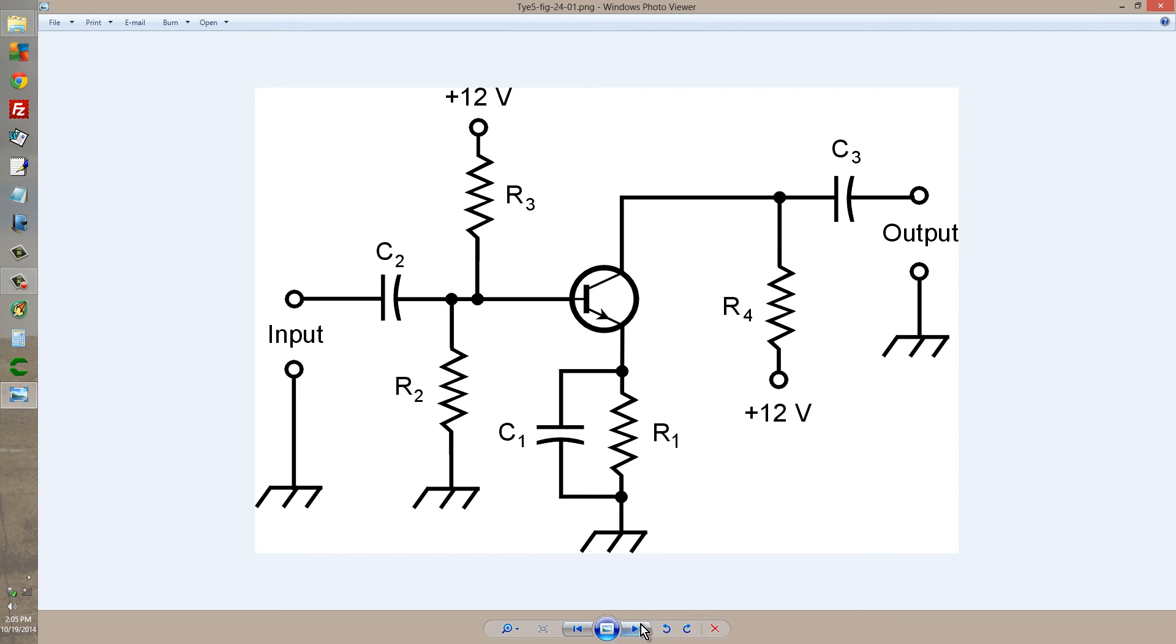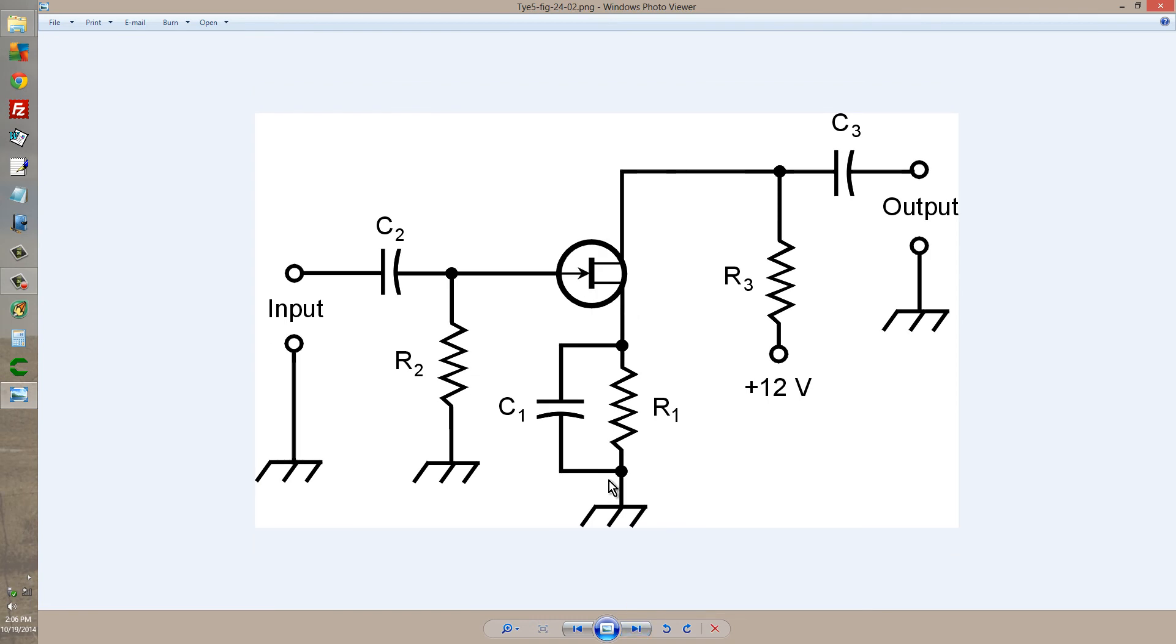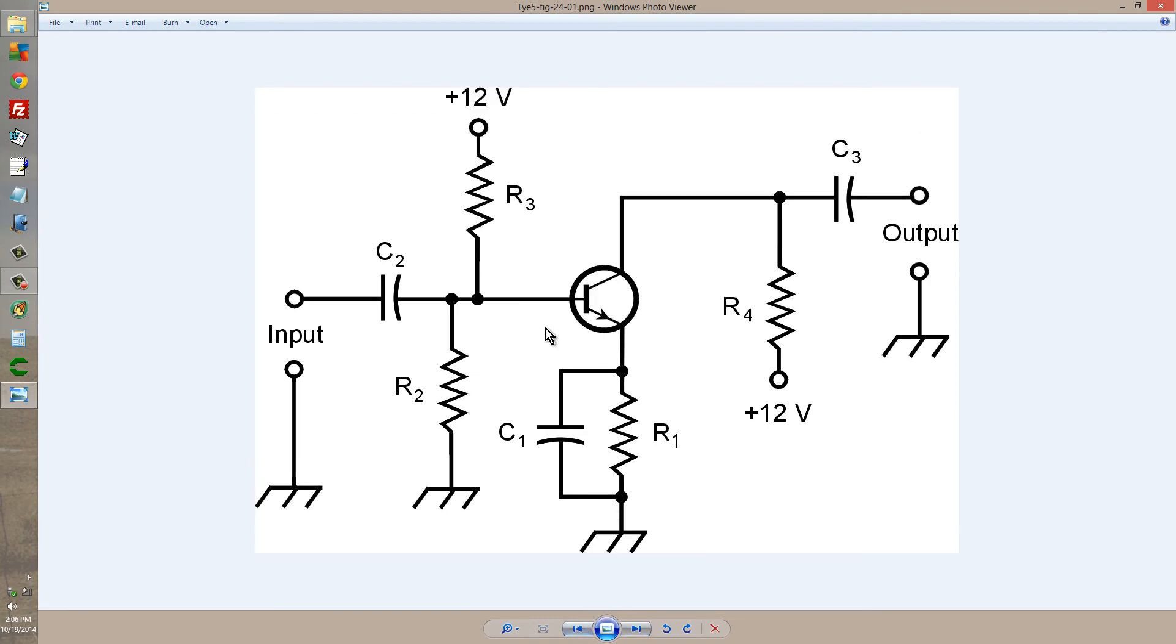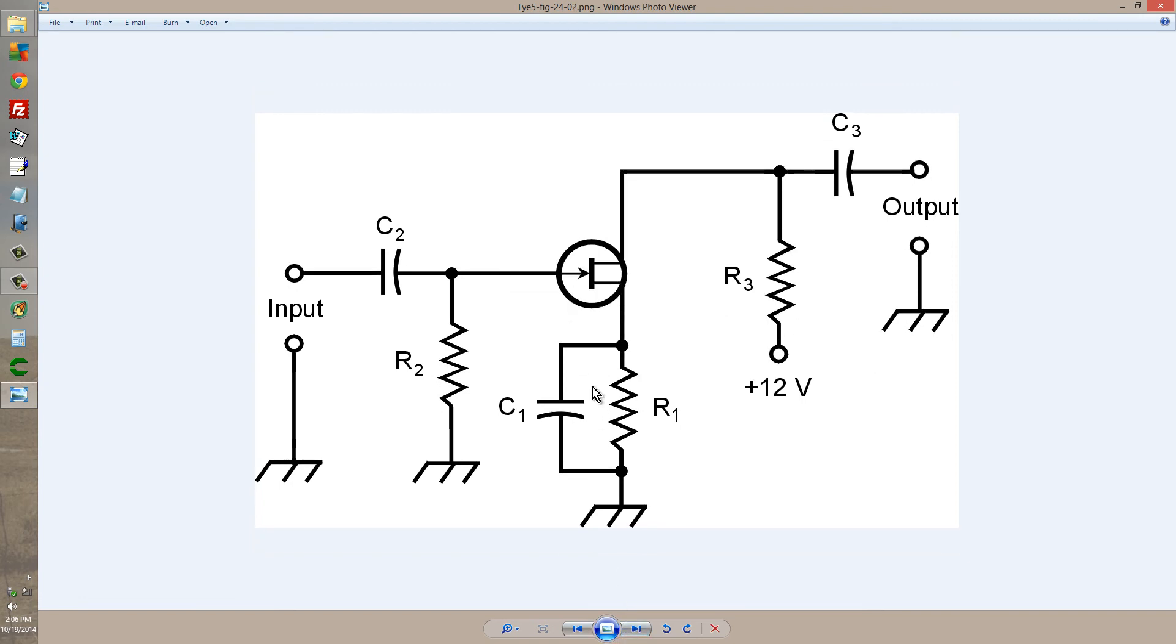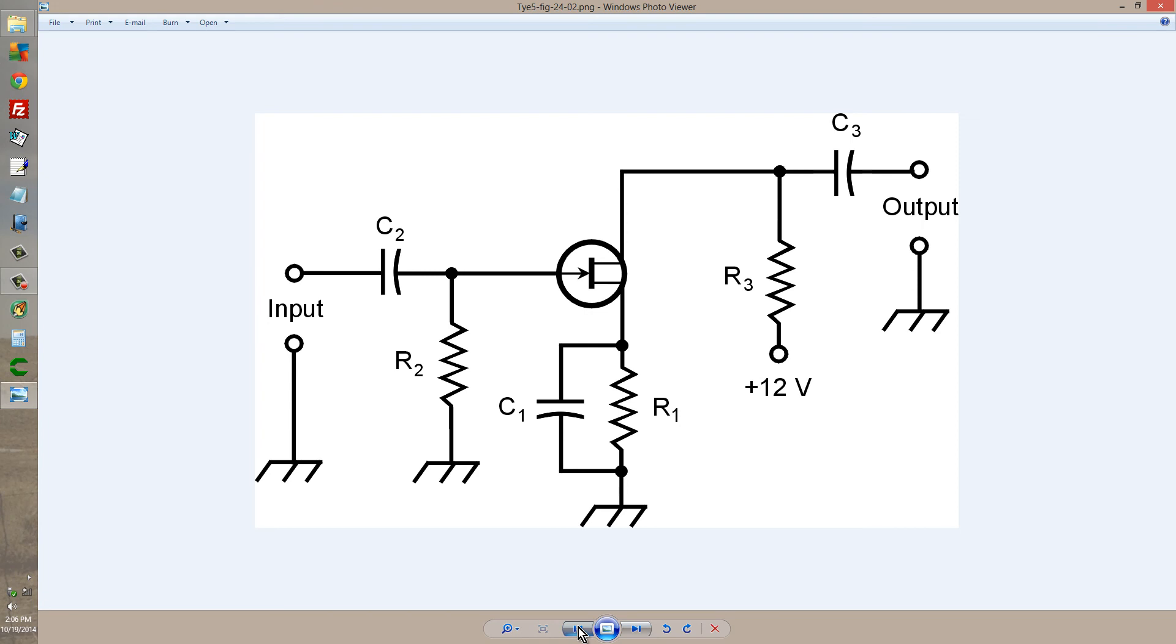If this were PNP and this were a P-channel device, the arrows would simply point the other way, and instead of a positive power supply, you'd have a negative supply. Otherwise, you'd pretty much get the very same thing.